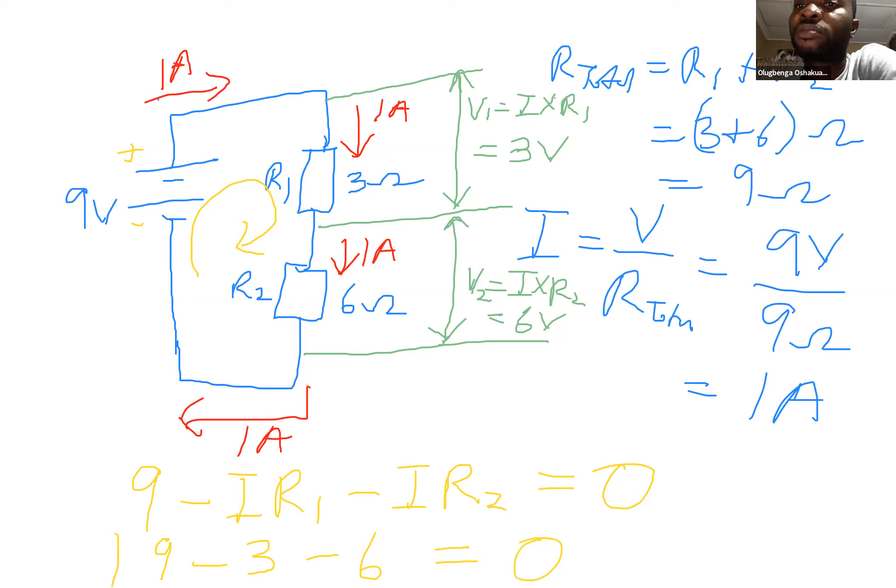And looking at it, 9 minus 3 minus 6, it is 0.